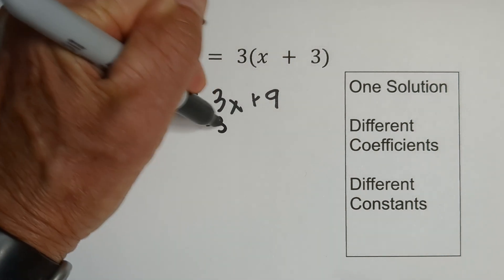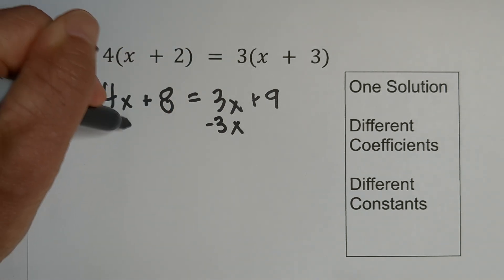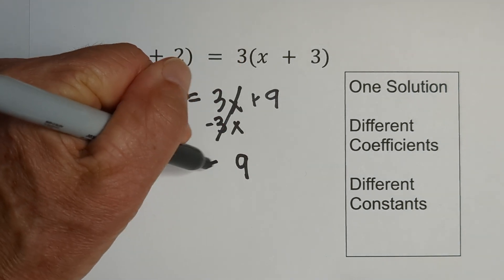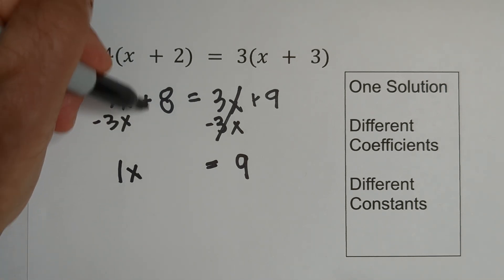We're going to do that by an inverse operation. So we're going to subtract 3x from both sides. When we do that, these cancel and bring the nine down, and then four minus 3x is 1x, and bring the eight down.